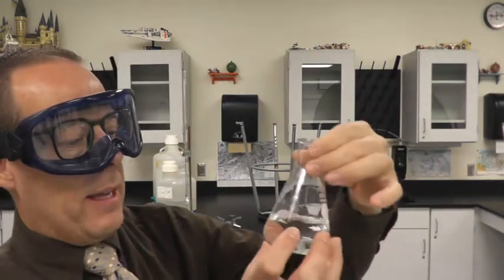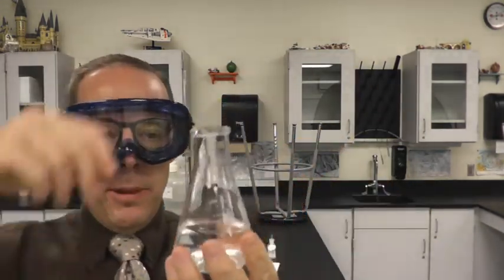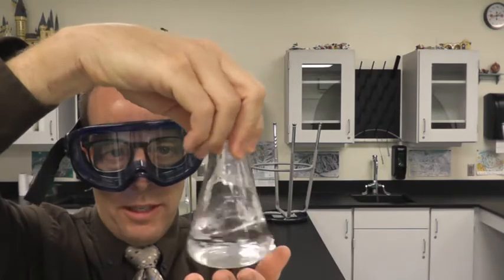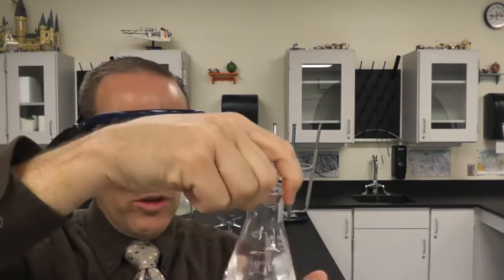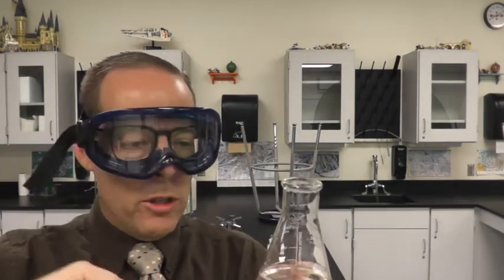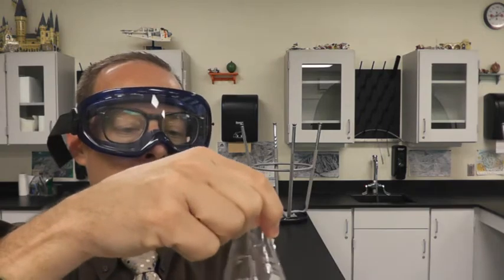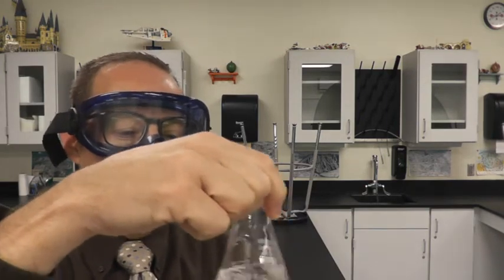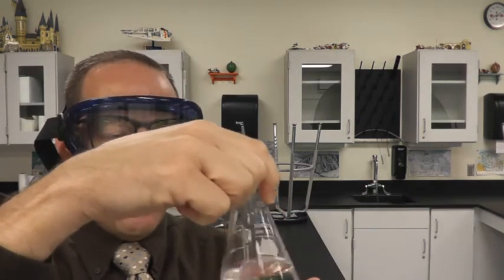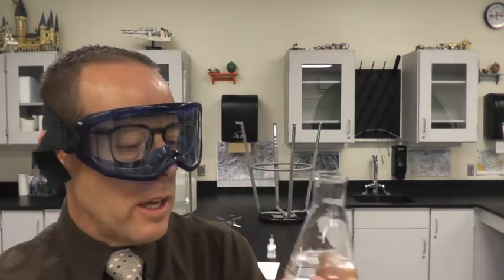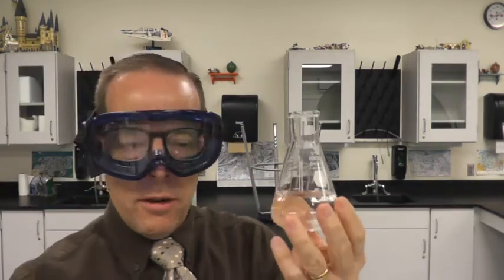So I am back. And so Erlenmeyer flasks are shaped like this so that you can swirl it and hopefully the liquid doesn't come up the sides. If we were using a beaker, you have a tendency to, if you're swirling, because it's vertical, your water spills out or your solution spills out, whatever happens to be in the mixing container. So Erlenmeyer flasks were designed so that you could swirl them. And it looks like most of my KHP is dissolved.